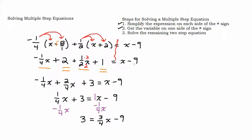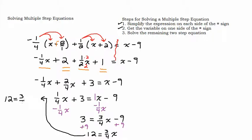Now we have a two-step equation. Add 9 to both sides, giving 12 equals three-fourths x. Then multiply both sides by the reciprocal, four-thirds. Think of 12 as 12 over 1 — 3 goes into 12 four times, times 4 is 16. So x equals 16.